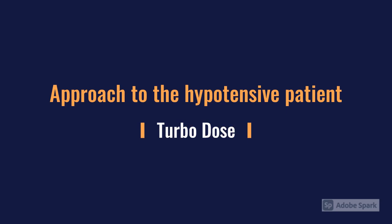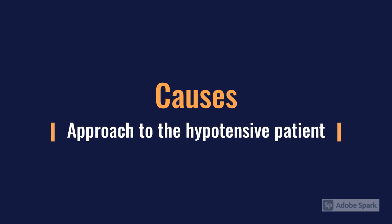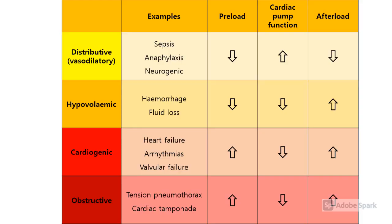That covers the general approach to hypotension. Now we'll go through the four different types of shock, as categorizing these helps guide diagnosis. The four types are: distributive (also known as vasodilatory), hypovolemic, cardiogenic, and obstructive.